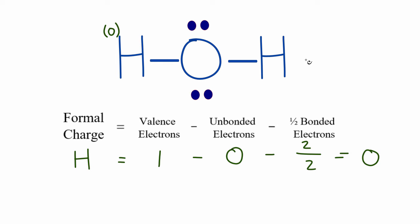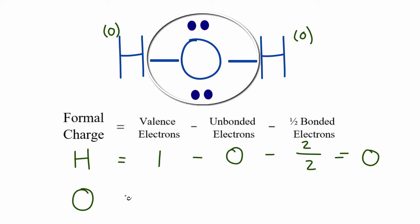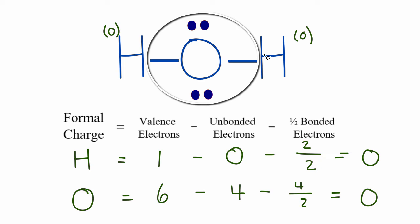Since both hydrogens are identical, we assign the same formal charge of zero to the other hydrogen without recalculating. For oxygen: it's in group 16 and has six valence electrons, minus four unbonded valence electrons (two lone pairs), minus four bonded valence electrons divided by two. Six minus four minus two equals zero. So the formal charge on oxygen is also zero. It's not surprising — H₂O is simple, but it's a good example to build on.